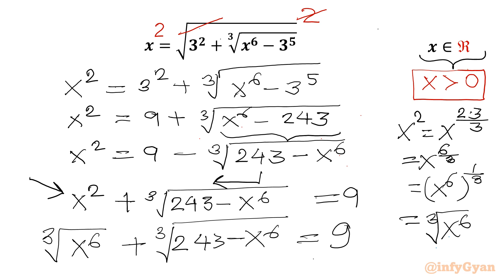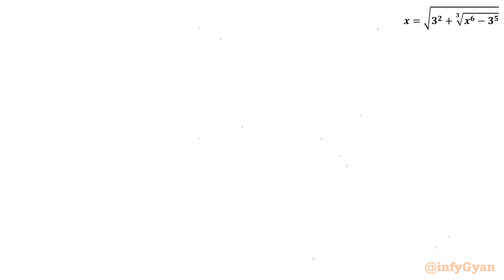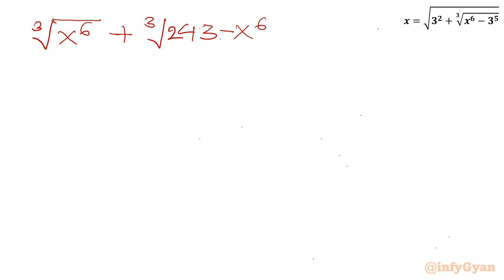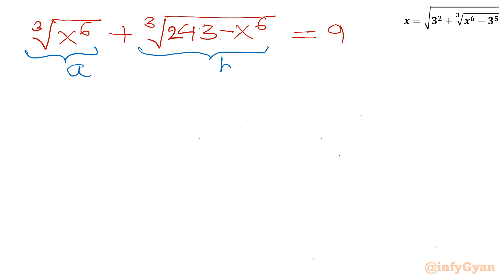Now we have to solve this radical challenge instead of the original one. Let me rewrite: ∛(x⁶) + ∛(243 − x⁶) = 9. Now I will use substitution — let the first radical equal A and the second radical equal B. So A = ∛(x⁶).